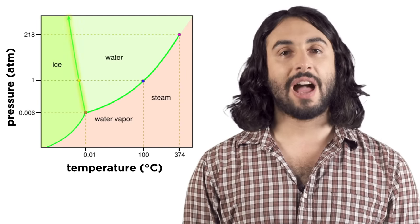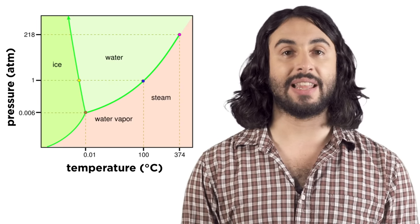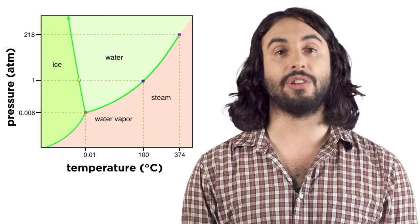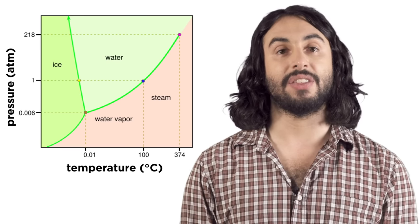For water, the line between solid and liquid slants up and left because the solid form is less dense than the liquid form.